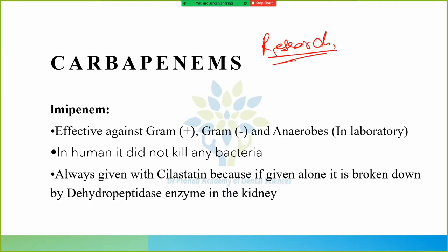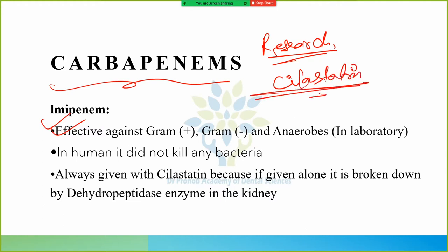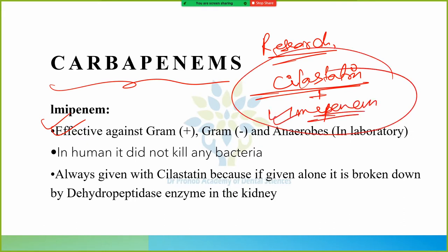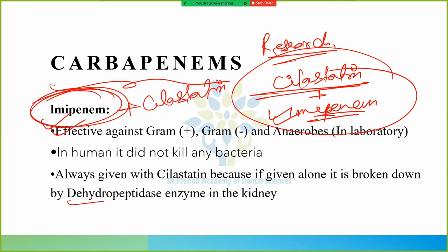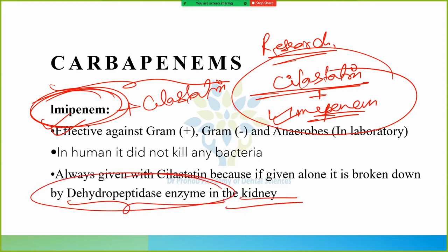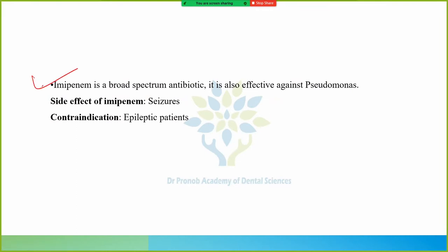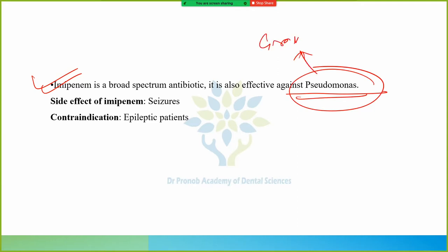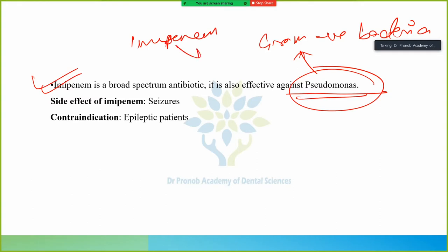Scientists did research on how to make imipenem work. They discovered silastatin — when silastatin is given with imipenem, it works. So imipenem is never given alone; it is always given with silastatin because if given alone it is destroyed by dehydropeptidase enzyme in the kidney. Imipenem is a broad spectrum antibiotic and is also effective against Pseudomonas, a gram negative bacteria.